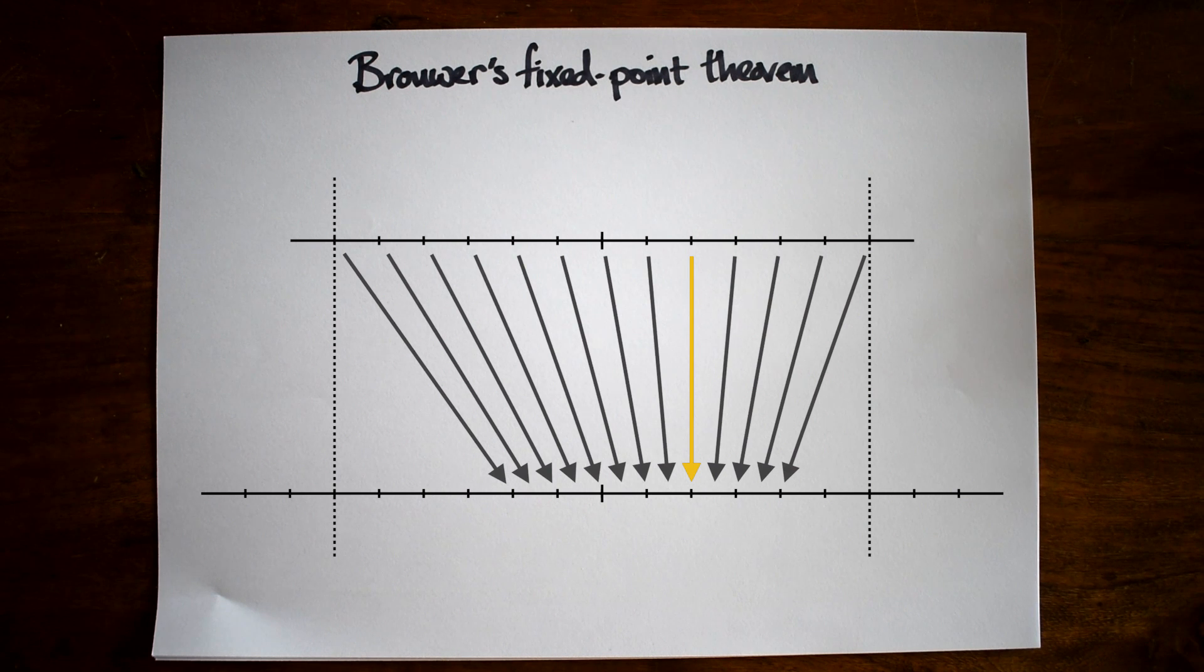The number at the base of the arrow is being transformed into exactly the same number at the tip of the arrow. Brouwer's fixed point theorem says that no matter what transformation we did, we'll have at least one of these vertical arrows.